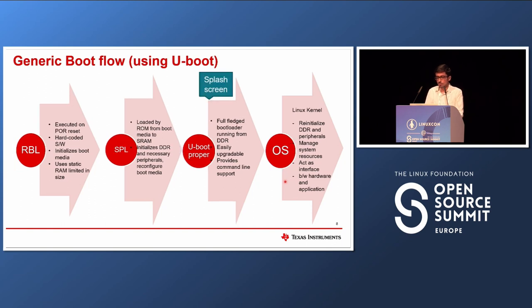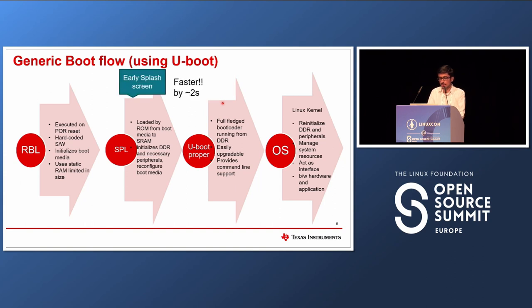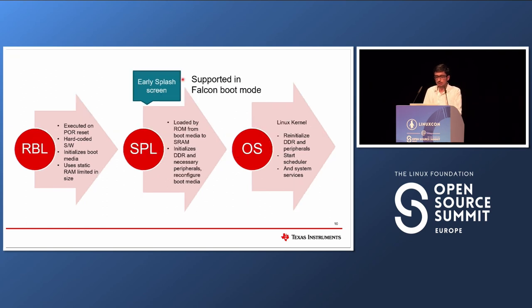Until now, splash screen support was present only at the U-Boot proper stage, which is third in the pipeline. With early splash screen, we added support for splash screen in the SPL stage so that the splash screen is up faster — by two seconds. Early splash screen also supports Falcon boot mode, where the U-Boot proper stage is skipped and SPL directly loads the kernel. With splash screen available at SPL, the splash stays persistent when the operating system is loaded even when U-Boot proper is not in the chain.